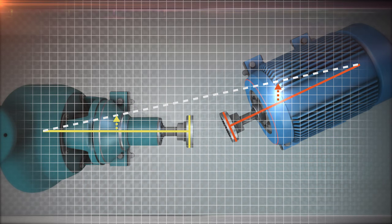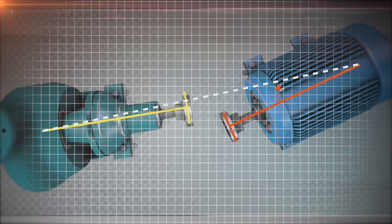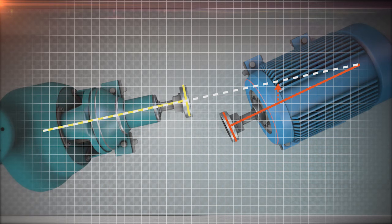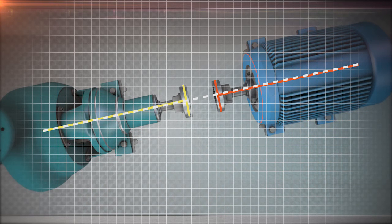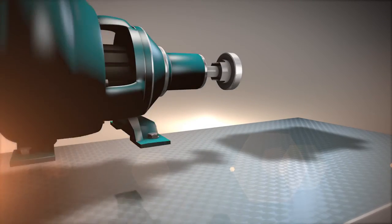We simply use the laser alignment system to show us the smallest correction. The same applies for the base bound condition. Becoming bolt or base bound can generally be prevented with proper initial machine installation.